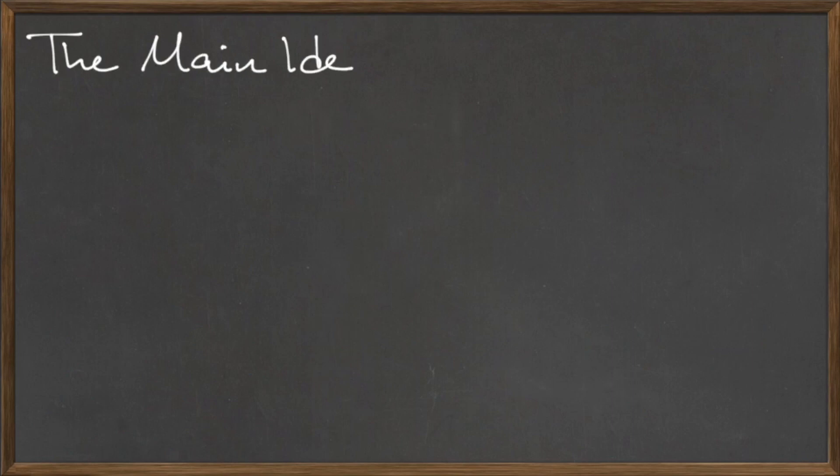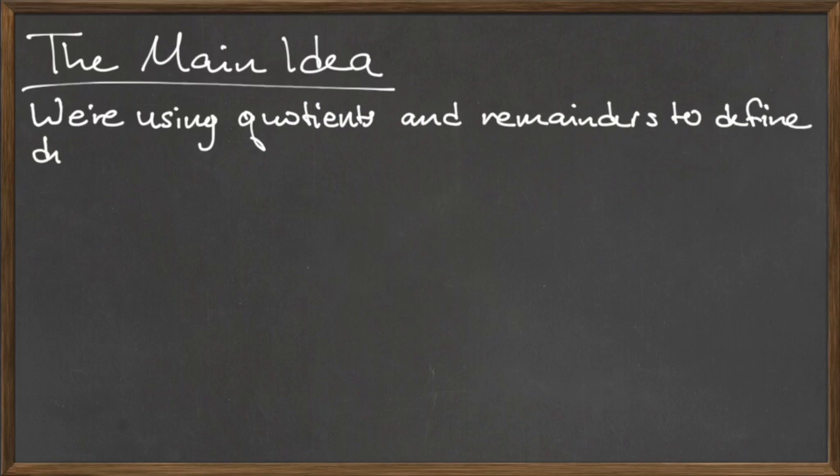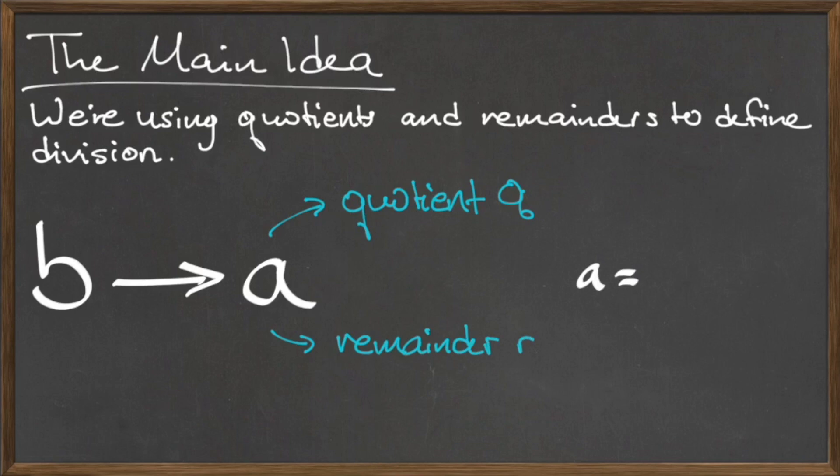Using the idea of quotients and remainders, we can officially define division. The division of a by b can be summarized in the equation a is equal to q times b plus r, where q is the quotient and r is the remainder.